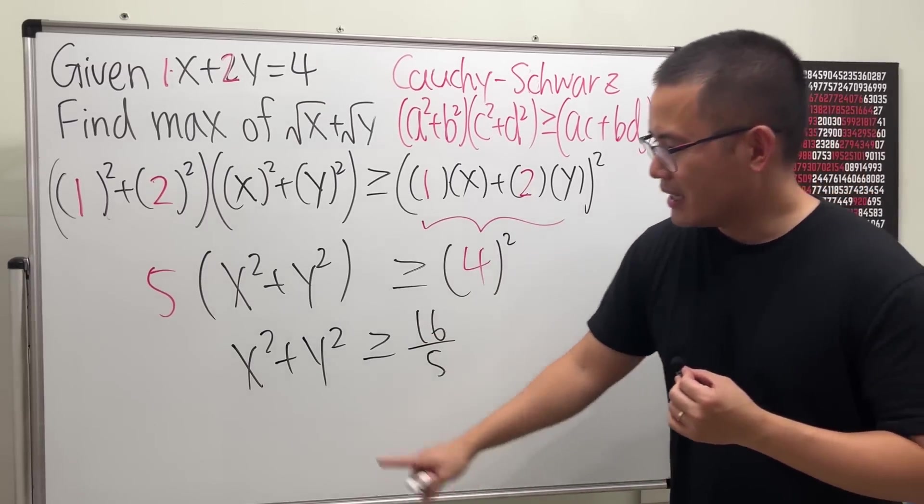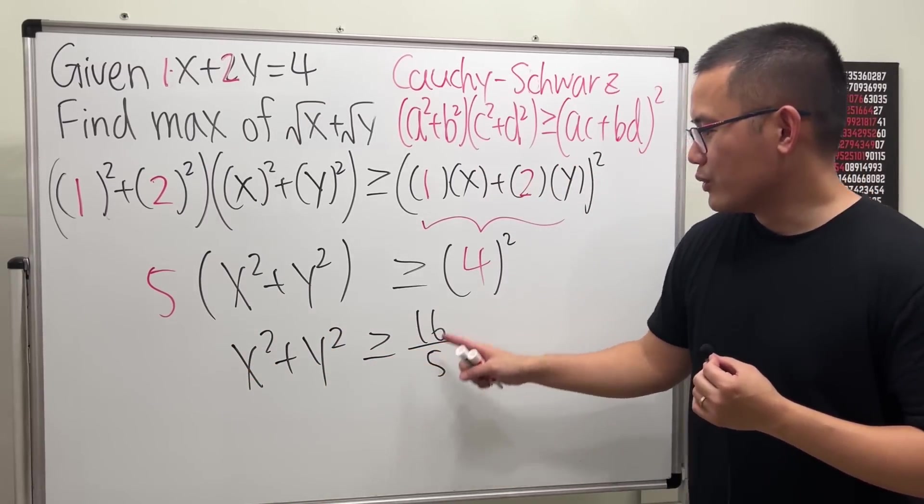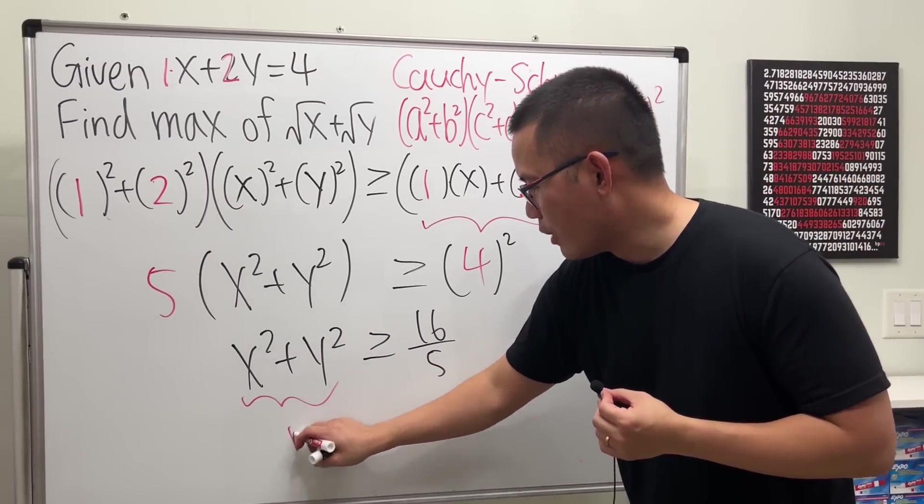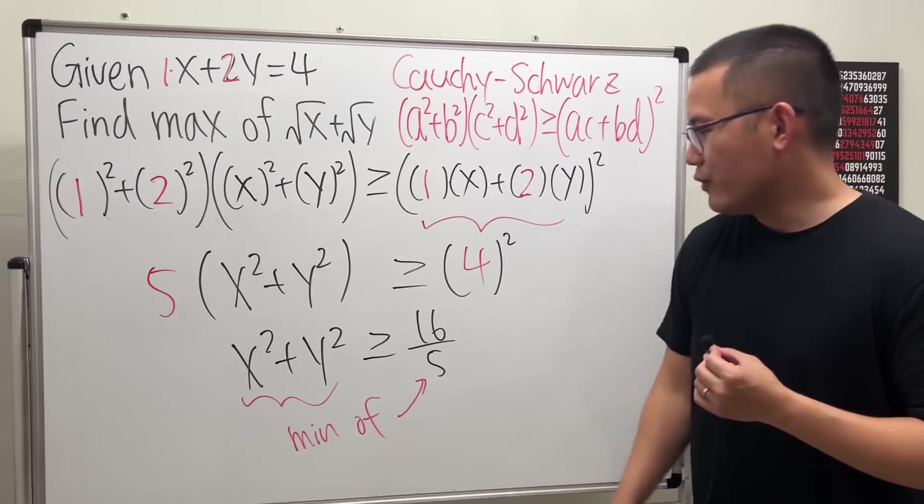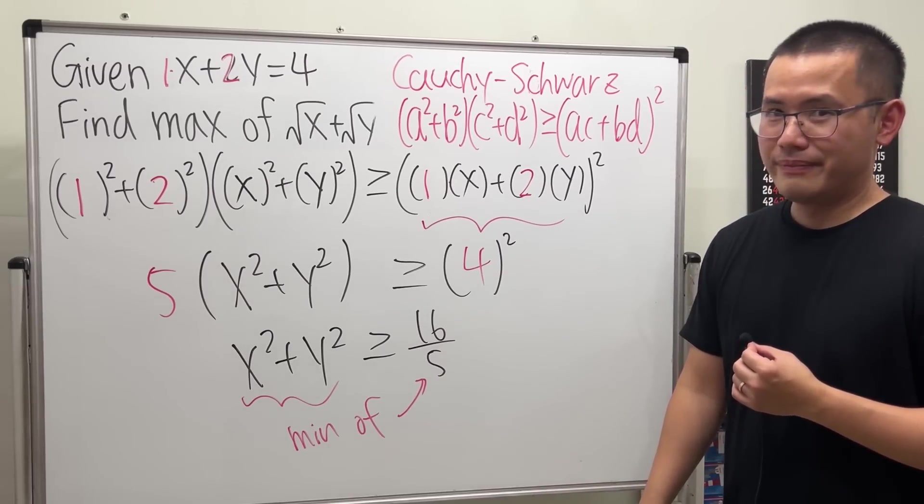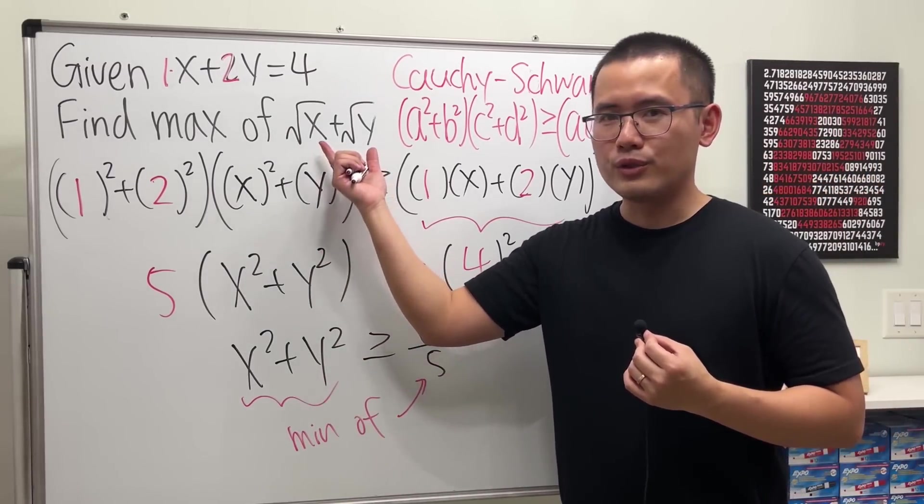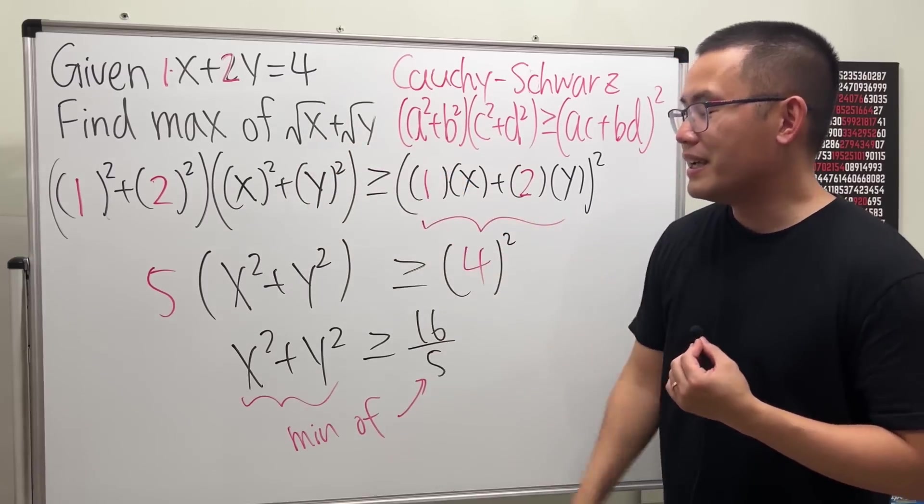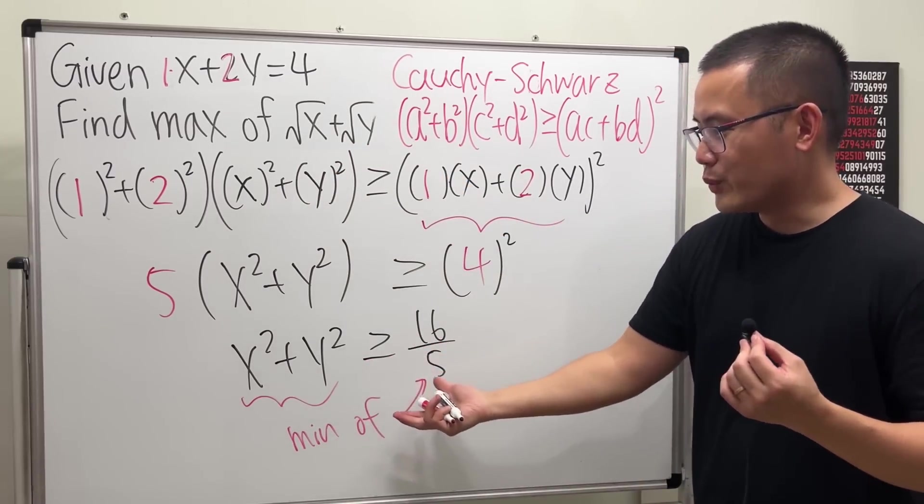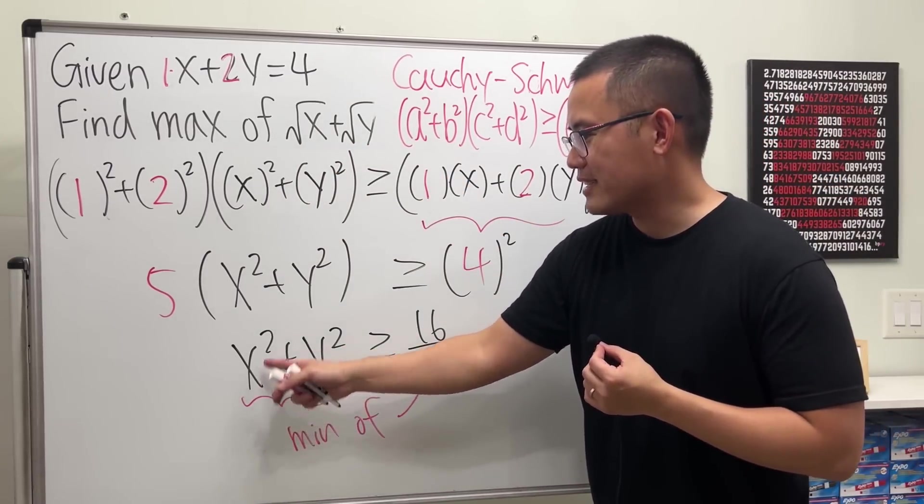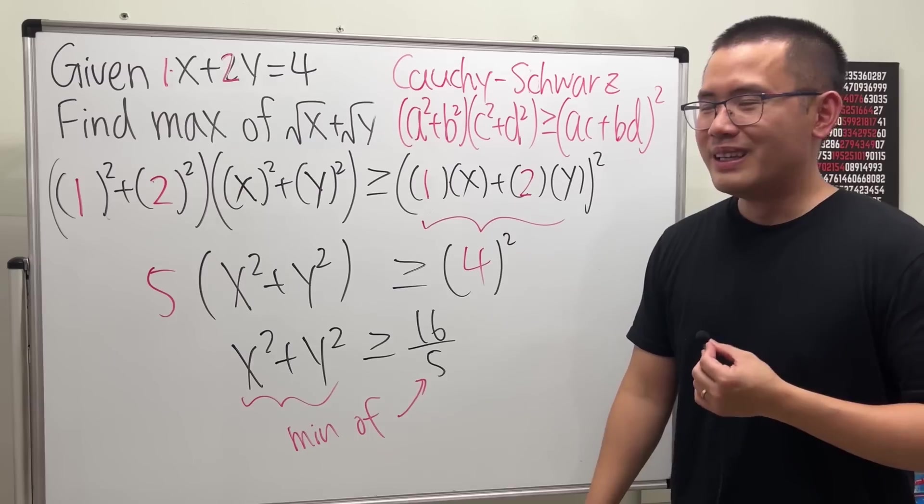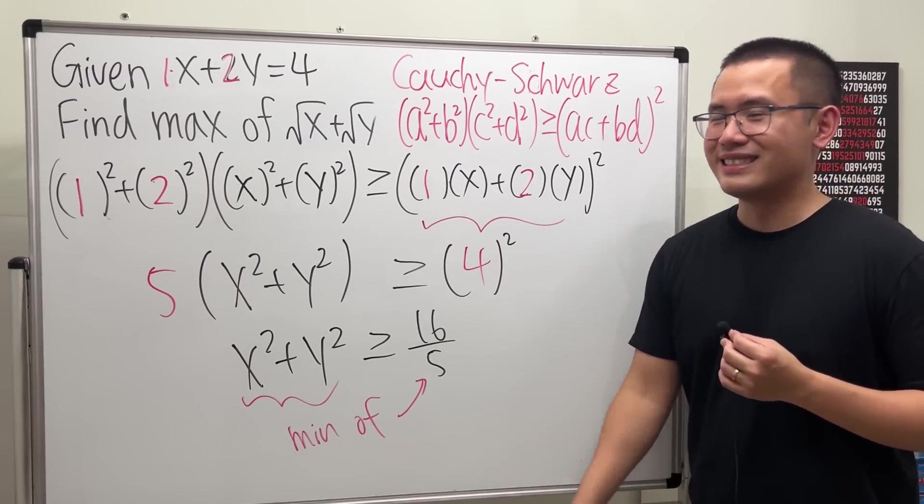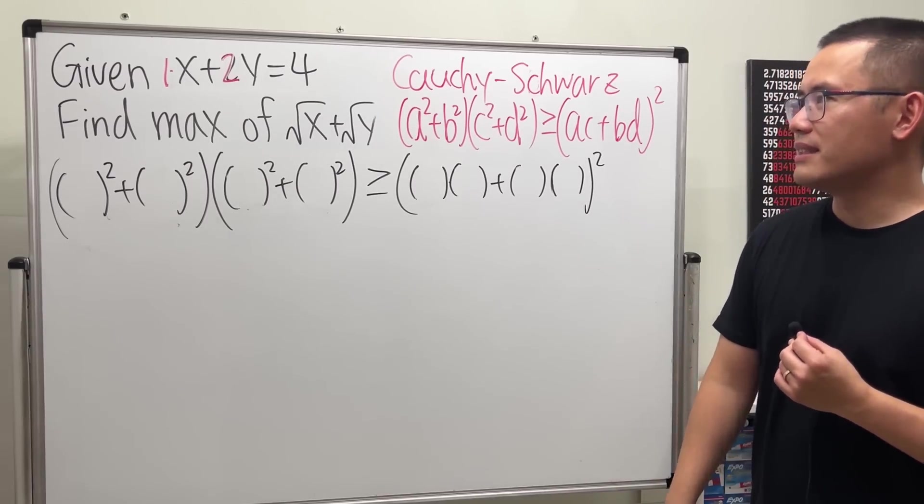What we are trying to say is, this thing is greater than or equal to 16 over 5, which has the minimum of 16 over 5. We just answered another question. Because, we are trying to figure out the maximum of square root of x plus square root of y. Unfortunately, they were not asking us for the x squared plus y squared minimum value. So, this is unfortunately not the correct way to fill in the blanks. So, how exactly do we fill in the blanks then?